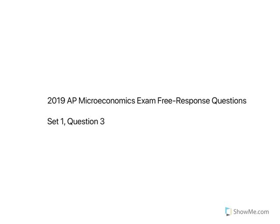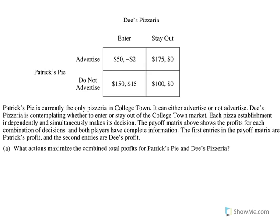Hey guys, it's Mr. Schmidt here. In this video I want to cover question three from set one of the 2019 AP Microeconomics exam's free response section. This question is a payoff matrix, and just like the utility question I did in the previous video, I'll repeat the payoff matrix for each question so we're not flipping back and forth.